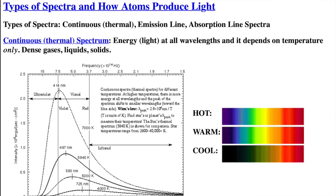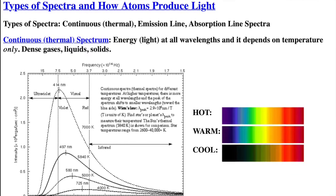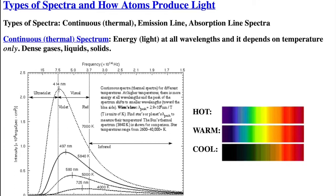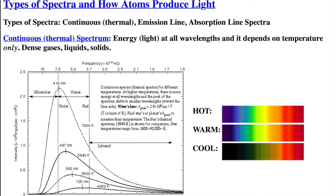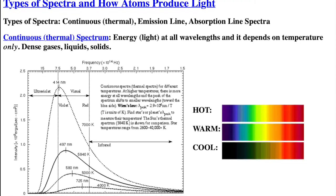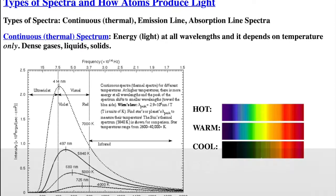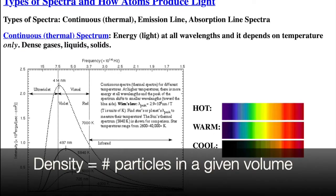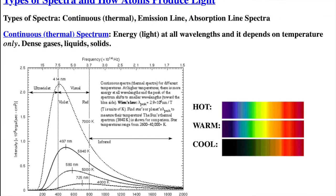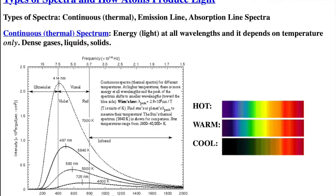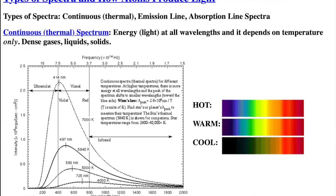It depends on only the temperature. Continuous means there are no breaks. One color merges smoothly into another color, and so on.